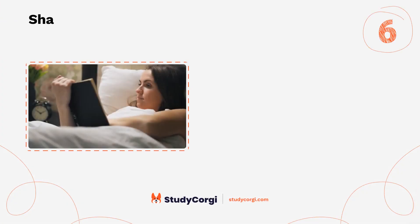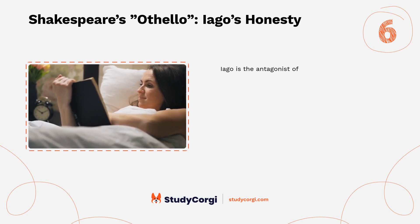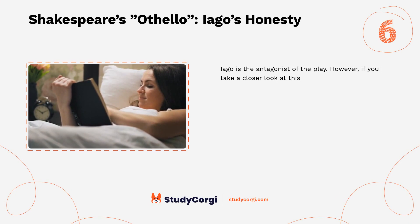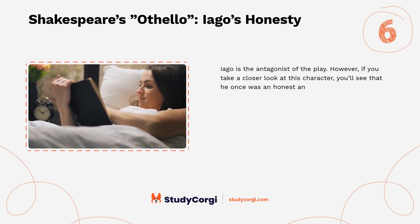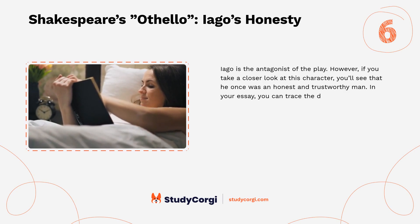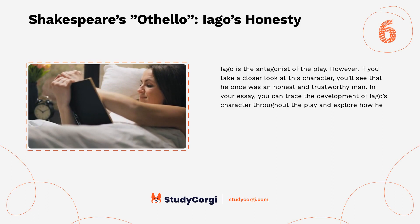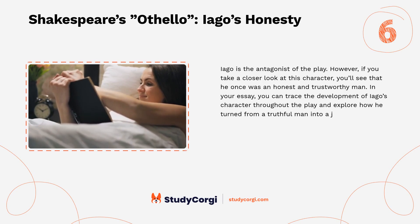Shakespeare's Othello: Iago's honesty. Iago is the antagonist of the play; however, if you take a closer look at this character, you'll see that he once was an honest and trustworthy man. In your essay you can trace the development of Iago's character throughout the play and explore how he turned from a truthful man into a jealous and mean villain.